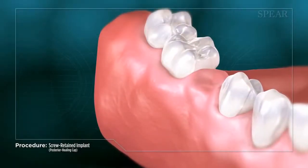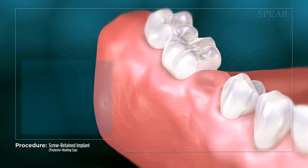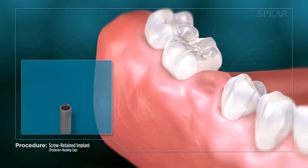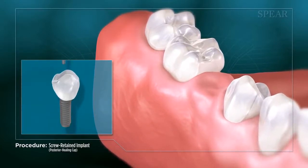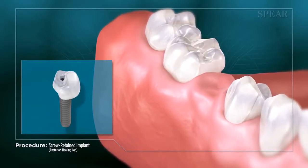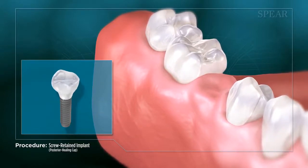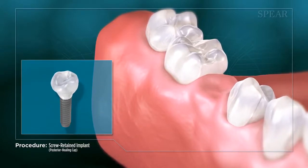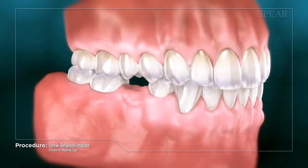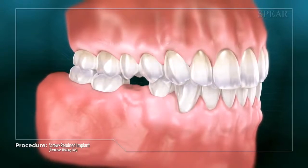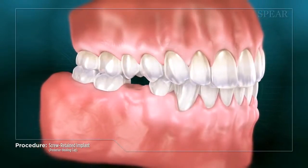Replacing a tooth can be accomplished with a dental implant. A dental implant restores the mouth to optimal function, stabilizing the surrounding bone, tissue, and teeth by substituting the root structure of the missing tooth. This helps to prevent further serious complications that can arise if the missing tooth is left untreated.